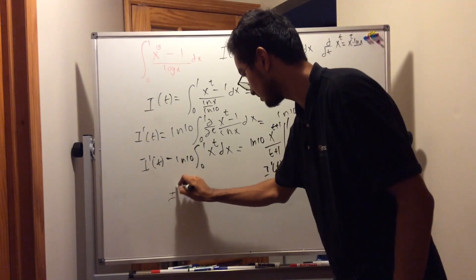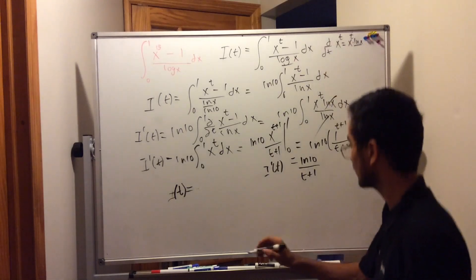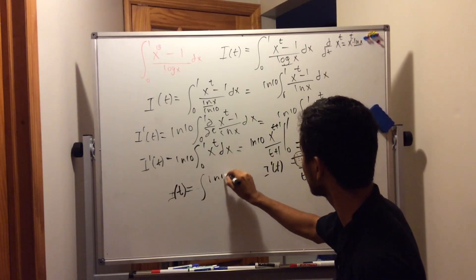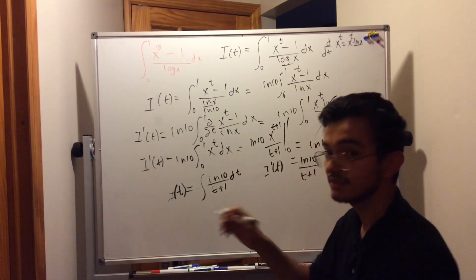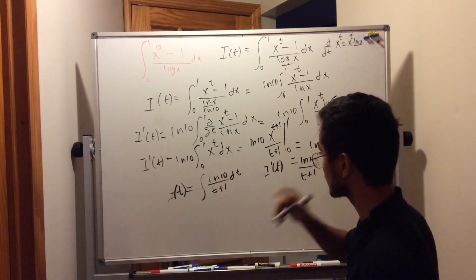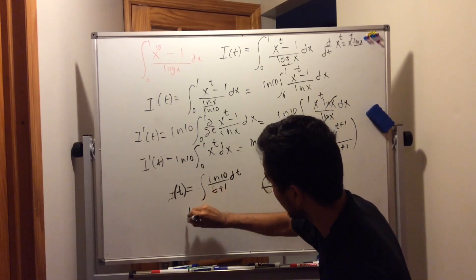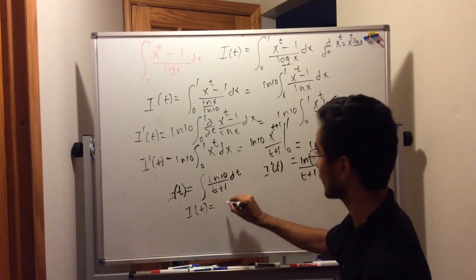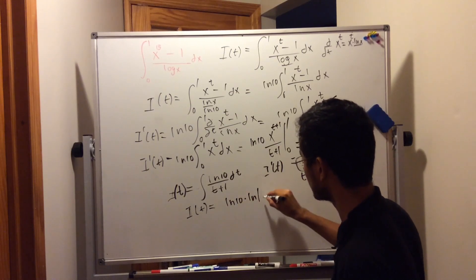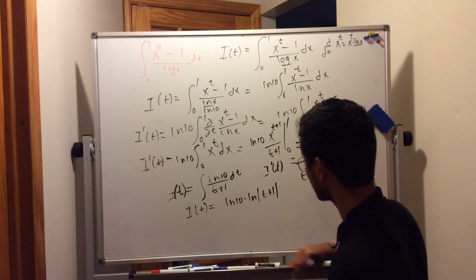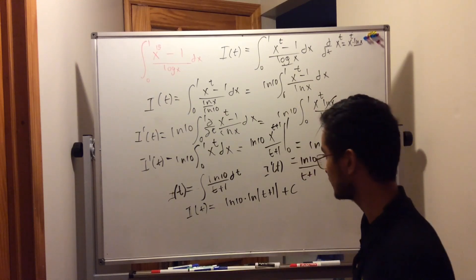Now we want to find i(t), not i'(t). So we go backwards — we take the integral of i'(t) with respect to t again. i(t) is going to be equal to the integral of ln(10) divided by t plus 1, dt. It's just an indefinite integral — we're not defining any bounds. If you recognize this, it's going to be a natural log. So i(t) equals ln(10) times ln of the absolute value of t plus 1, plus C, the constant of integration.